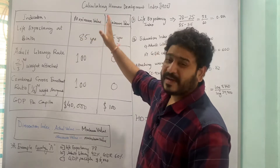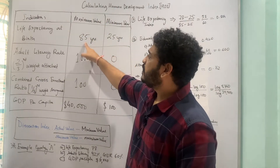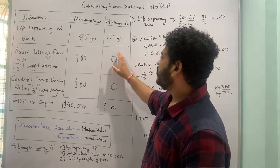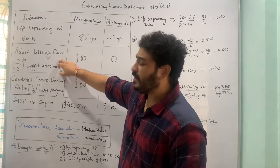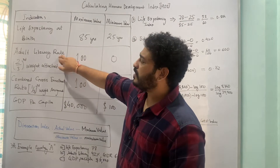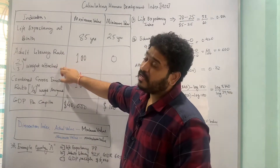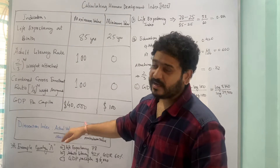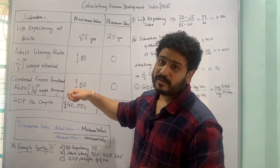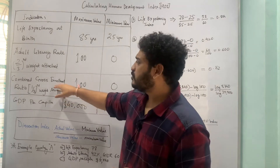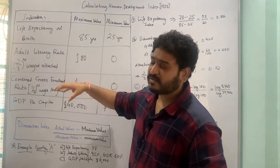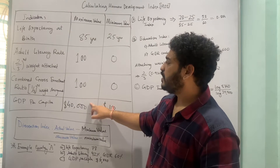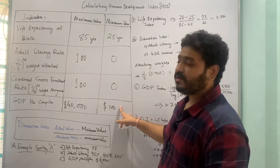The maximum value for life expectancy is 85 years and the minimum value is 25 years. For adult literacy rate, the maximum value is 100 and the minimum is 0. For the combined gross enrollment ratio, covering primary, secondary, and tertiary levels of education, we have a combined education index. Then for GDP per capita, the maximum value recorded is $40,000 and the minimum value is $100.